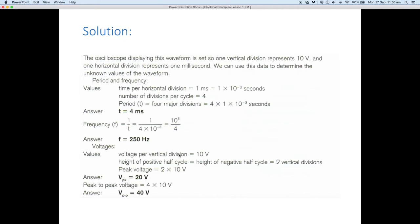So let's just review that again. We had four divisions at one millisecond giving us a time base of four milliseconds. One divided by four ended up being two hundred and fifty hertz. We had two divisions of peak voltage so we had twenty volts peak giving us forty volts peak to peak over the entire wave.